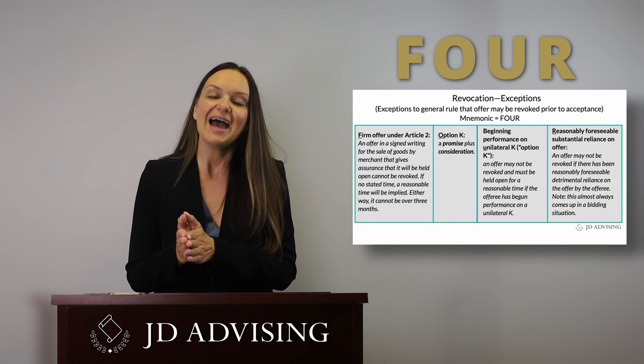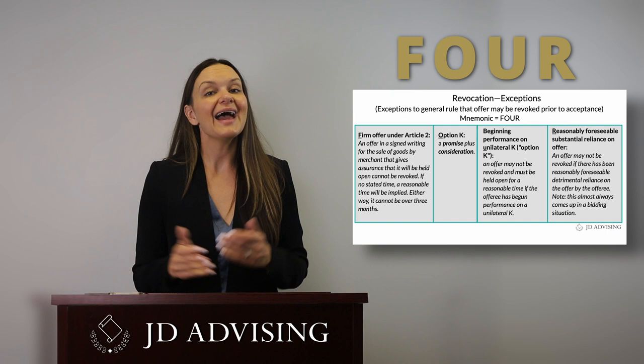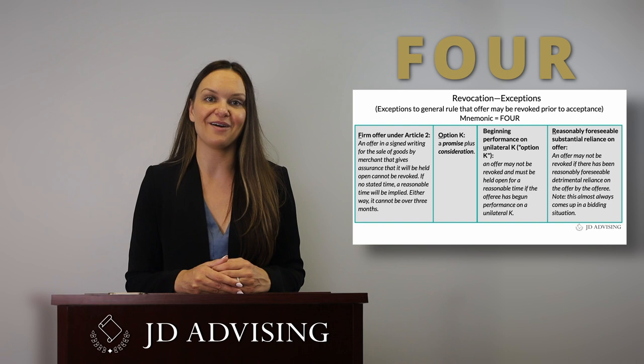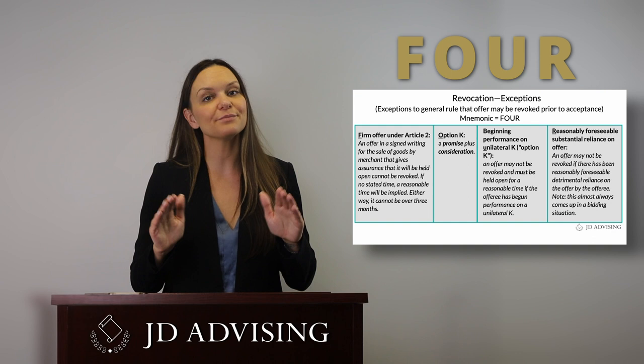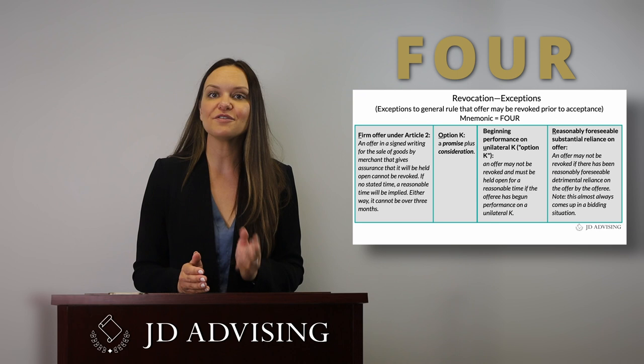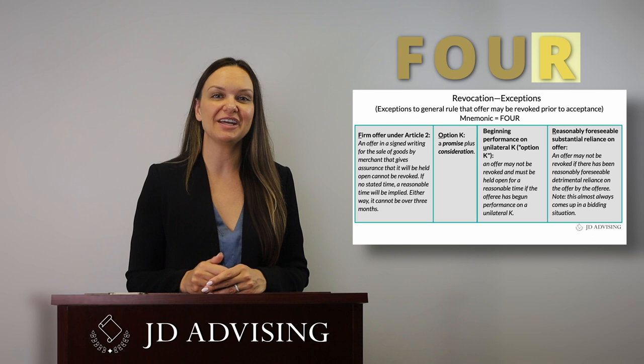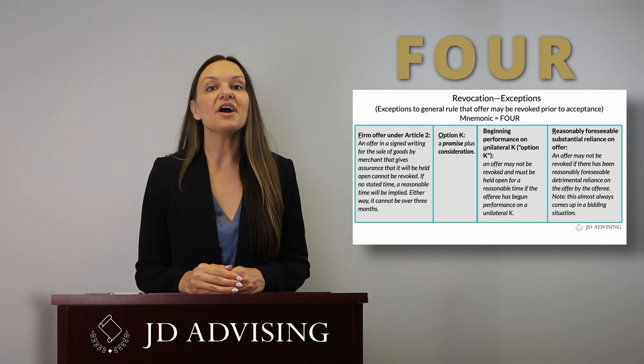To make sure we haven't lost our place: we are talking about ways to terminate an offer, specifically that revocation is one way. While generally an offer can be revoked at any time prior to acceptance, there are four exceptions. We have covered three of the four exceptions. We are now on the final exception — the R of our mnemonic FOUR. The fourth and final exception is reasonably foreseeable substantial reliance on an offer: an offer may not be revoked if there has been reasonably foreseeable detrimental reliance on it.